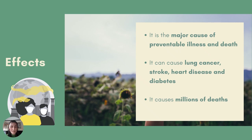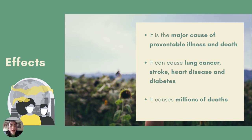Here we can see a picture of how the air looks at the Taj Mahal in India, where they have a major air pollution problem. Air pollution is considered to be a major cause of preventable illness and death. Polluted air can lead to lung cancer, stroke, heart disease, and diabetes, causing millions of deaths. In addition to health impacts, it also affects our economy.